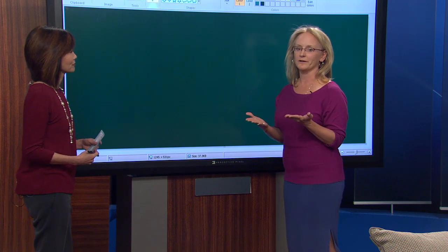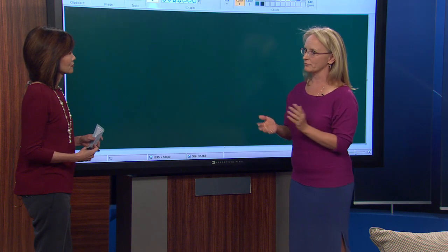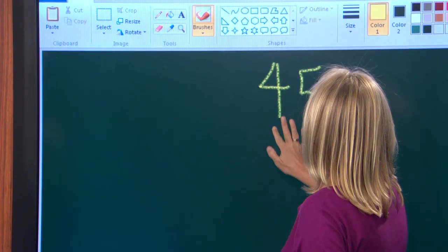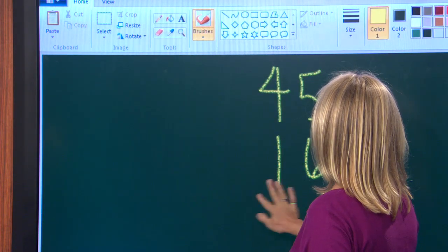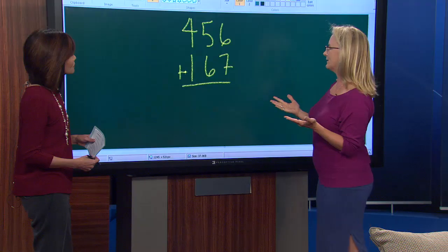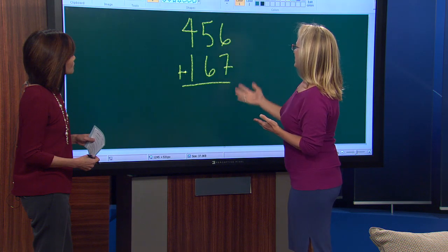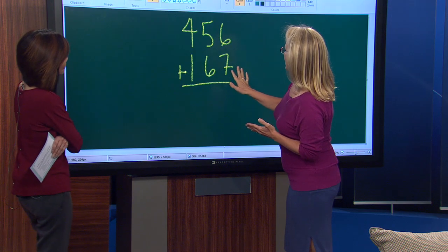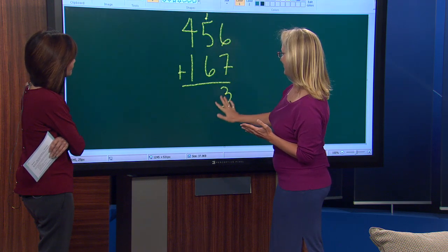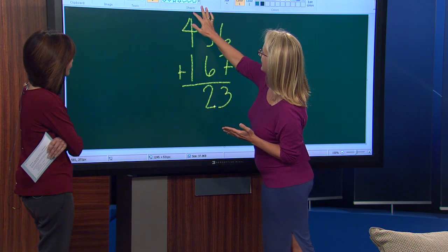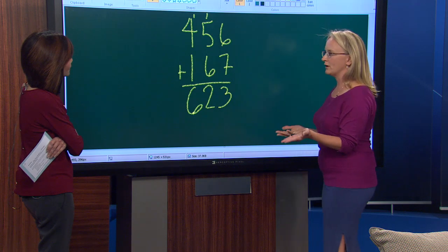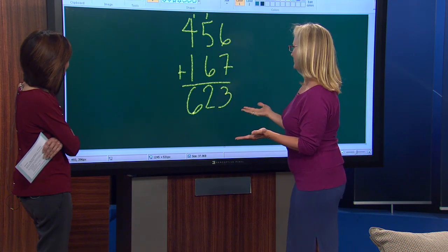So all of us parents grew up probably seeing problems like this, and this is probably still coming home on your kids' homework as well. And if you learned this in the traditional manner, you probably put a three here and carried the one, and then you put a two here and carried the one, and then we have a six here. So hopefully we're all in agreement that this is 623.